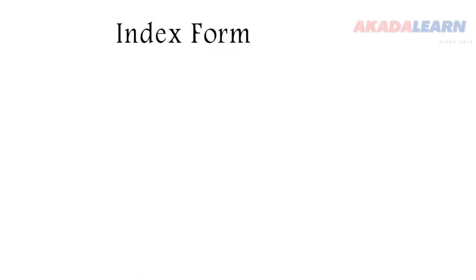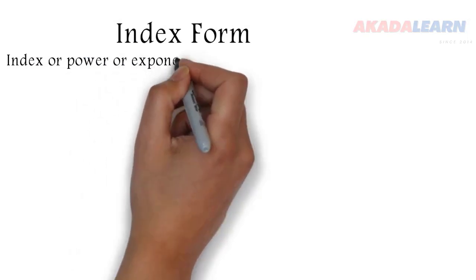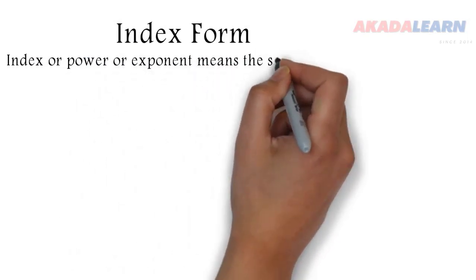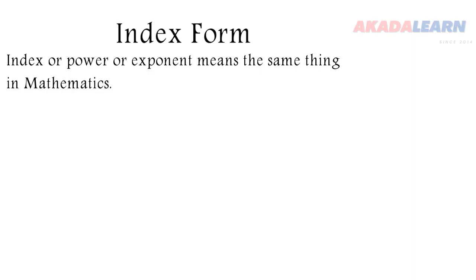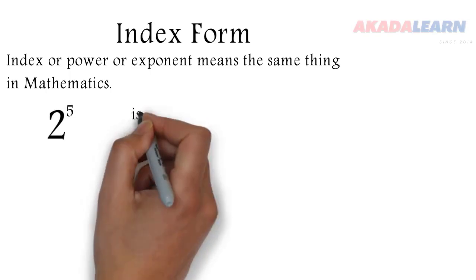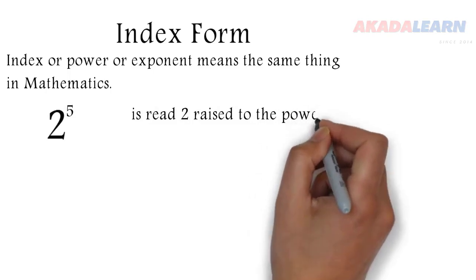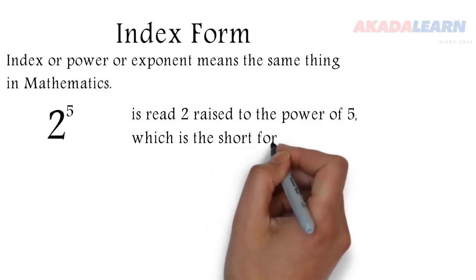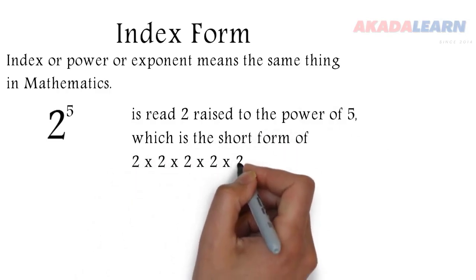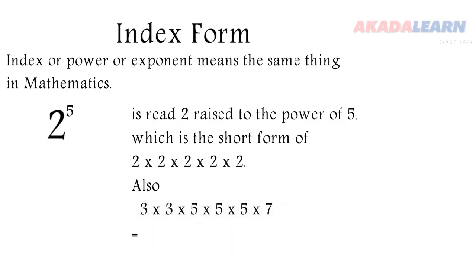Let's go now to index form. Index, power, and exponent — these three words mean the same thing in mathematics. When we say index, when we say power, when we say exponent, we are talking about the same thing. We can see the number 2 written with the number 5. That is read '2 raised to the power of 5,' and it is the short form of saying 2 times 2 times 2 times 2 times 2. So if 2 is multiplying itself 5 times, we say 2 raised to the power of 5.